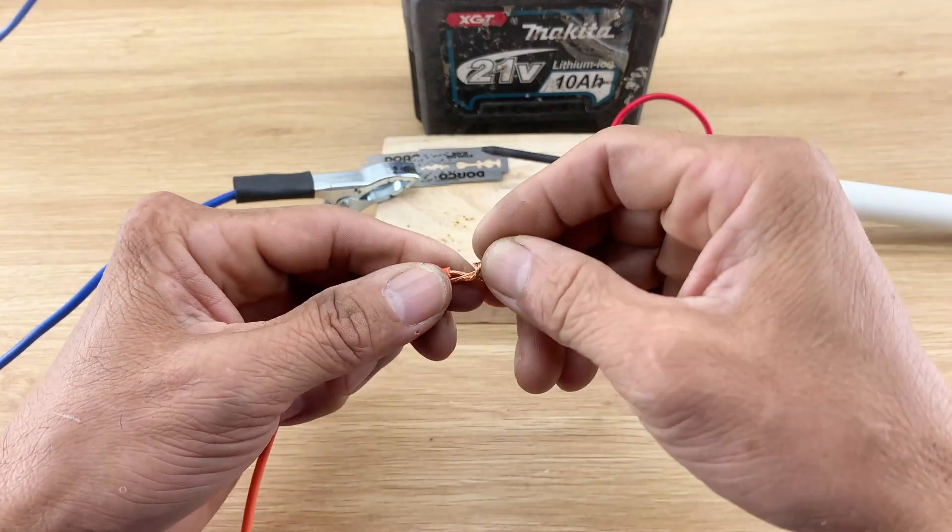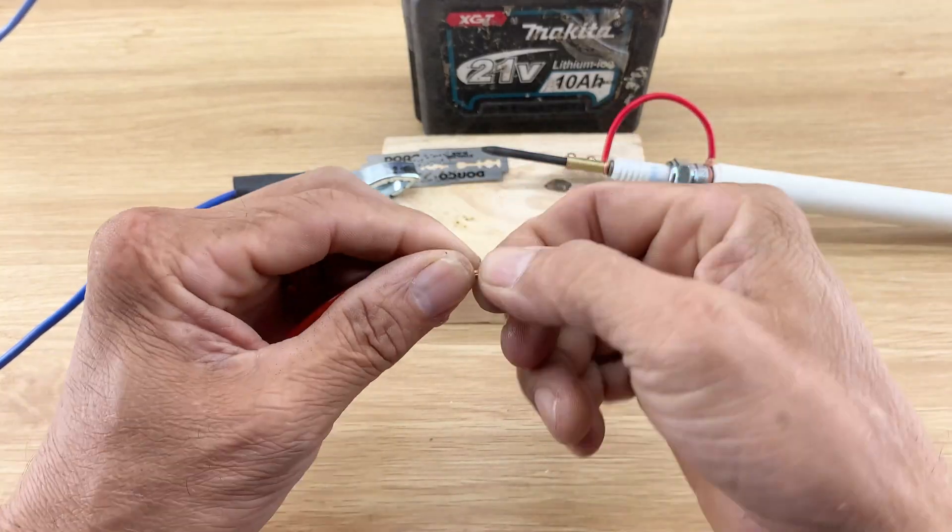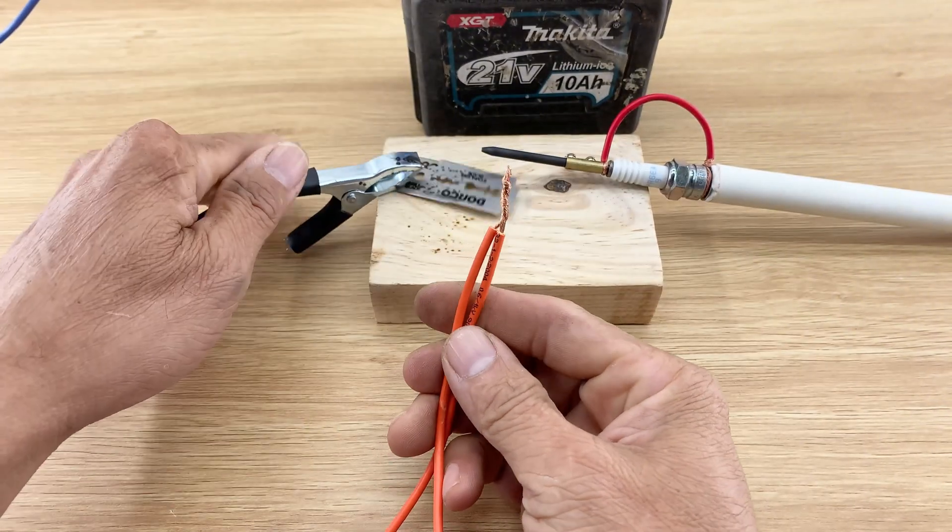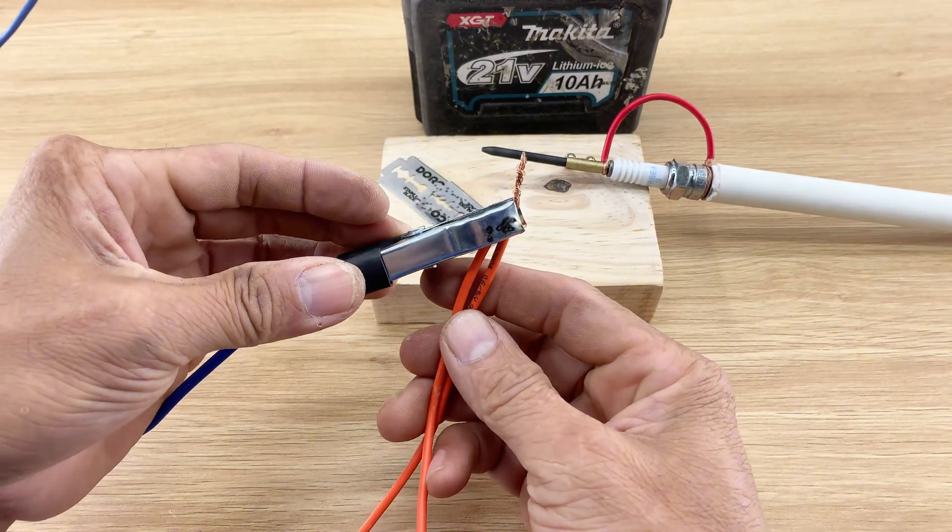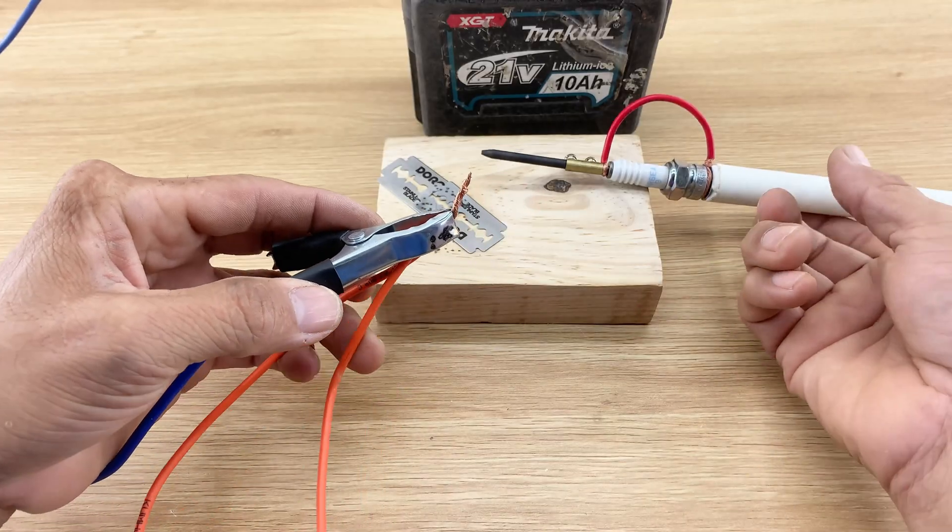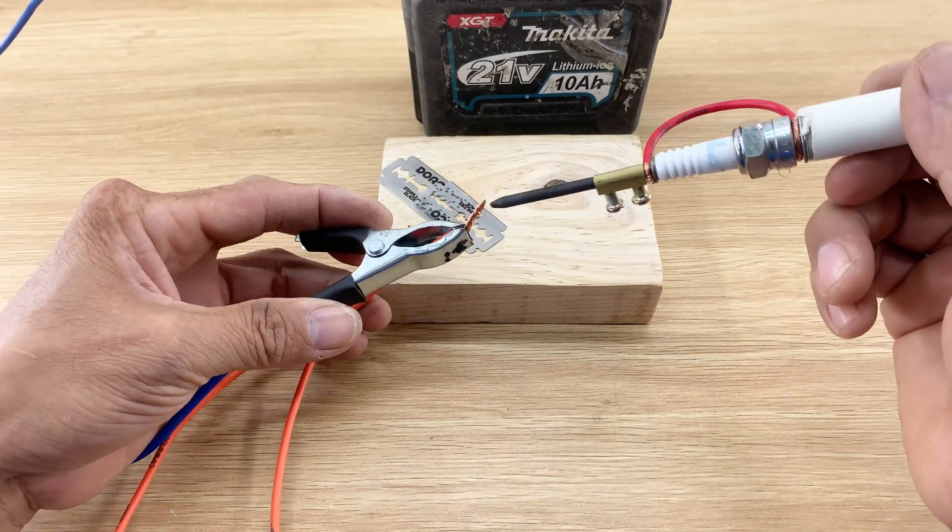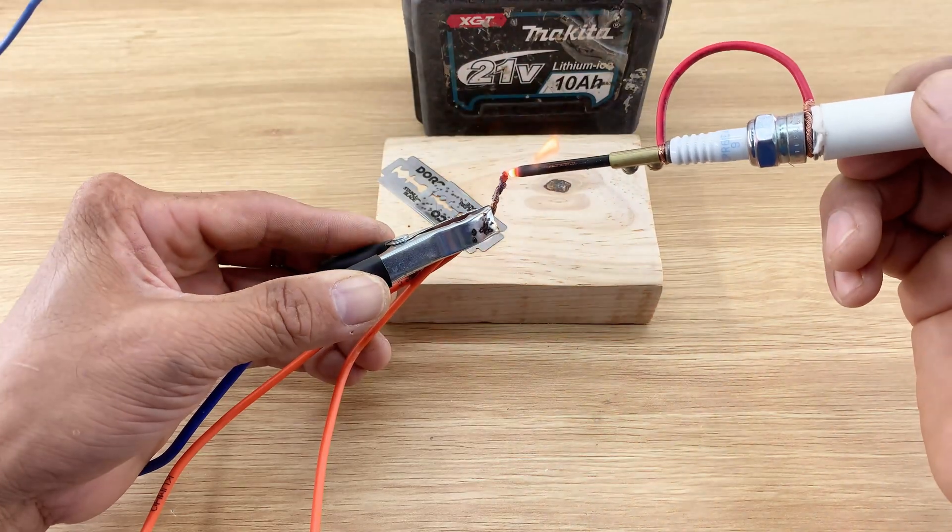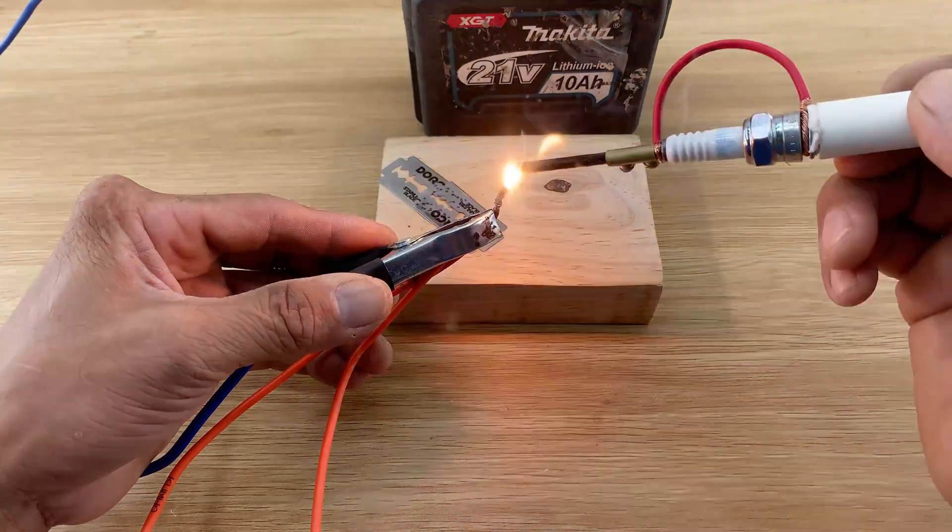Now let's try our soldering iron on two insulated copper wires. When I touch the tip of the wire, the copper core quickly melts, connecting the wires together.